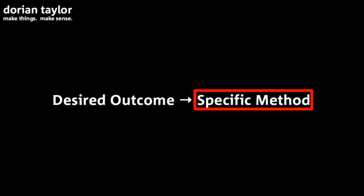Every project has a part of its anatomy that goes: desired outcome to specific method. The job of any project is to map the desired outcome to the specific method. In software, once you've got the specific method you're done — it's not like a building where you draw blueprints and then build. In digital media the blueprint is the building, because the code is the blueprint. So the question is how do we do that mapping part? Because that part is by definition different for every project, and a project by definition has some uncertainty associated with it.